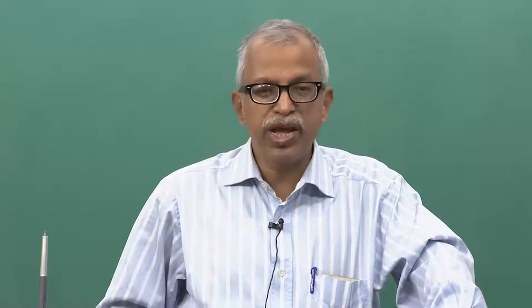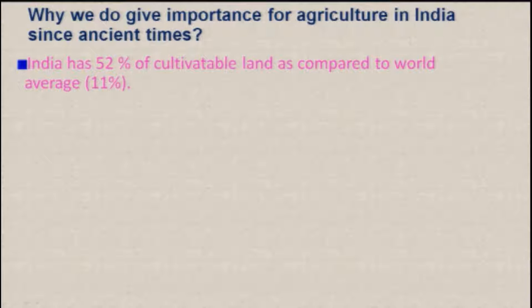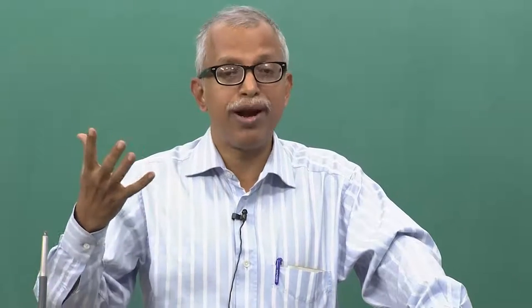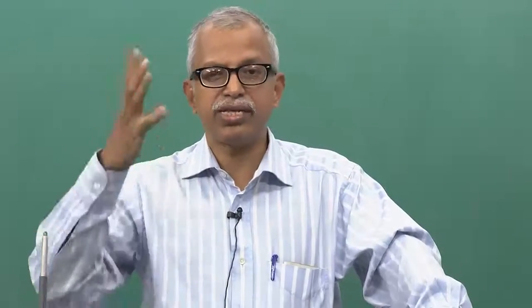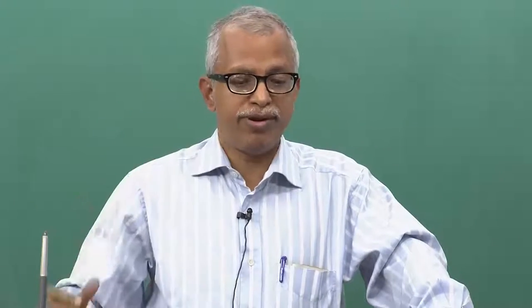We will have to see what kind of land we are having, what natural resources we have, and how those things are conducive for cultivation. India has 52 percent of cultivable land compared to the world average. You can say India is the food house of the world. She has the capability to produce food and food is important.